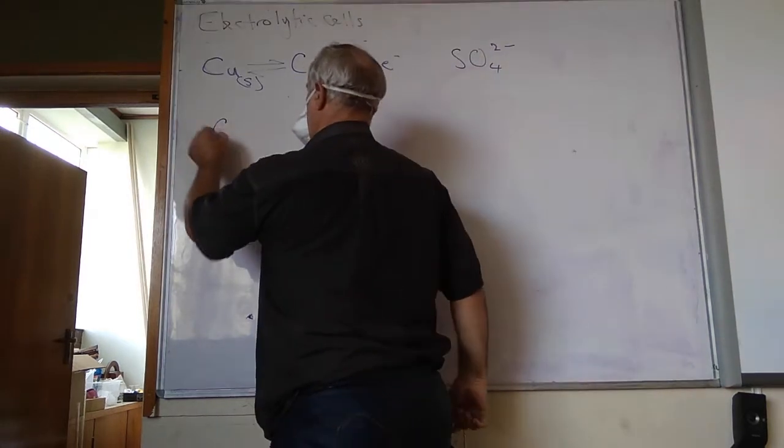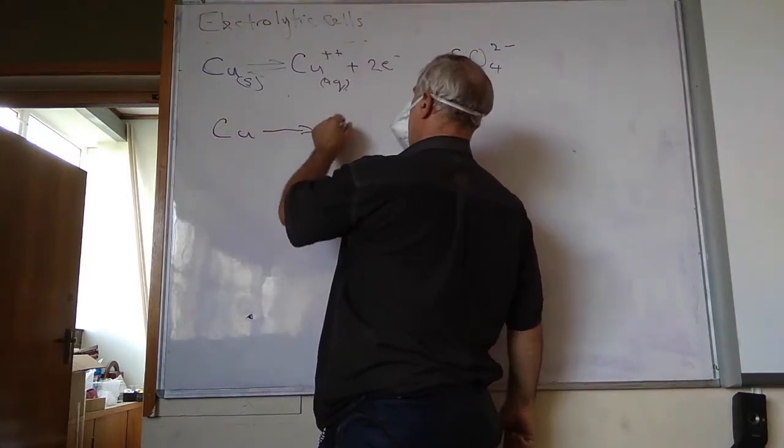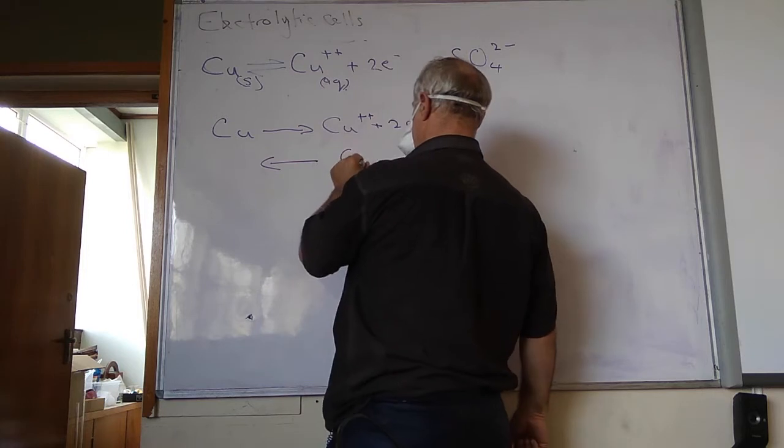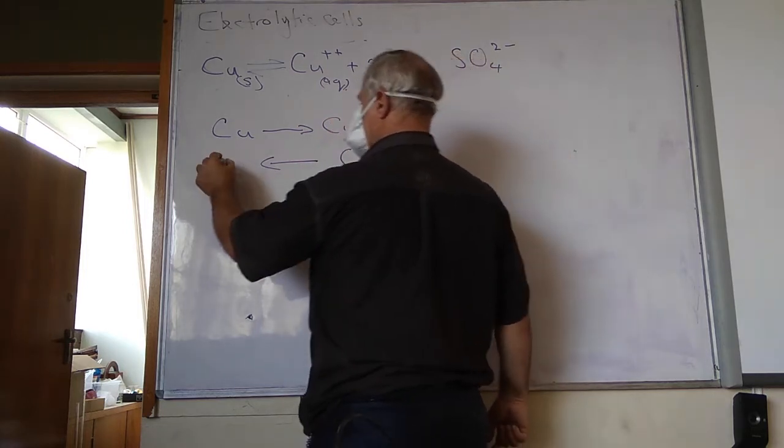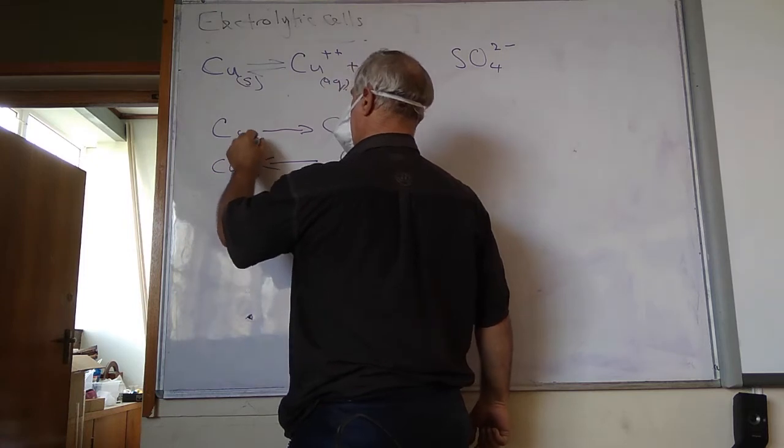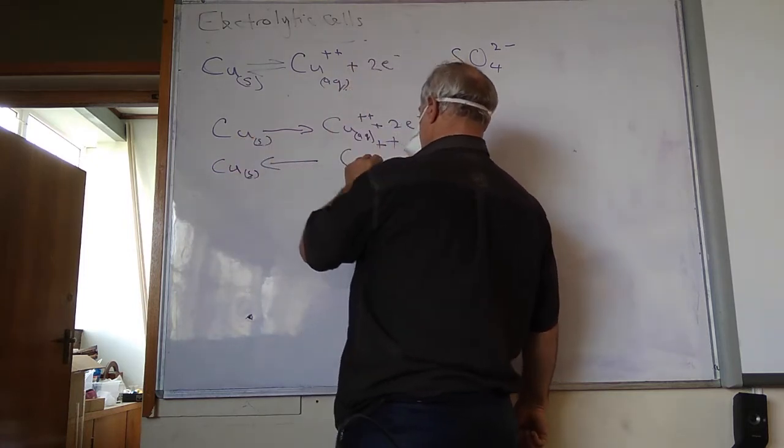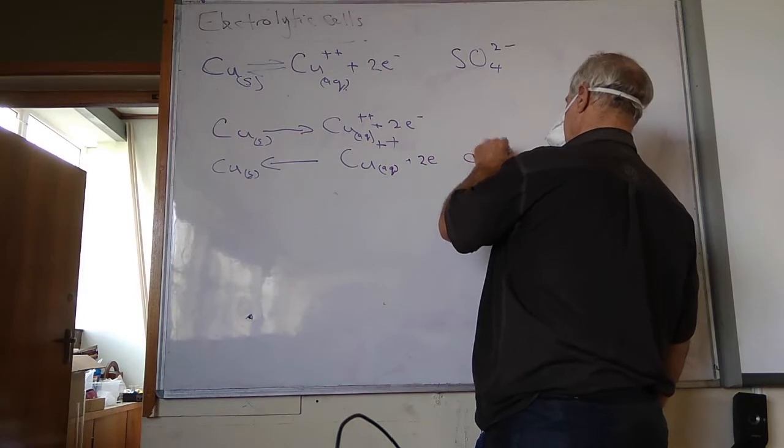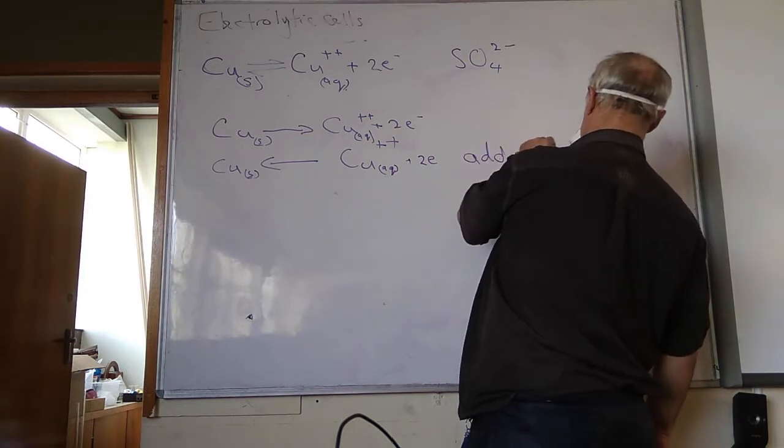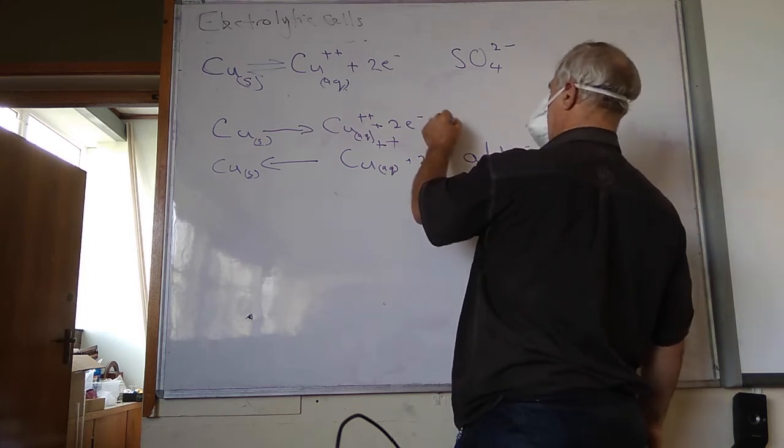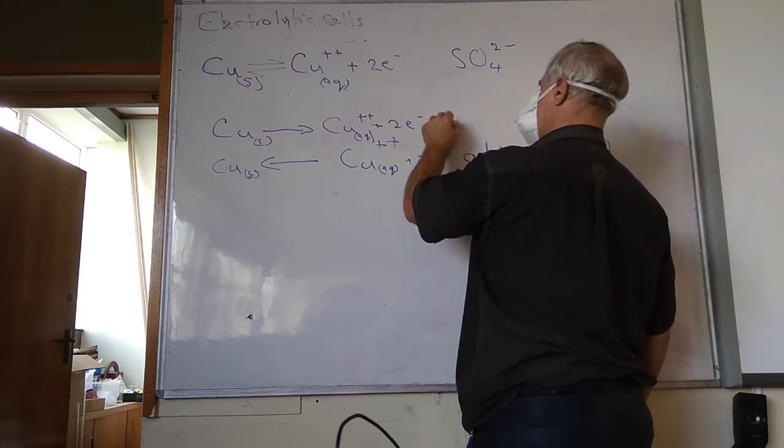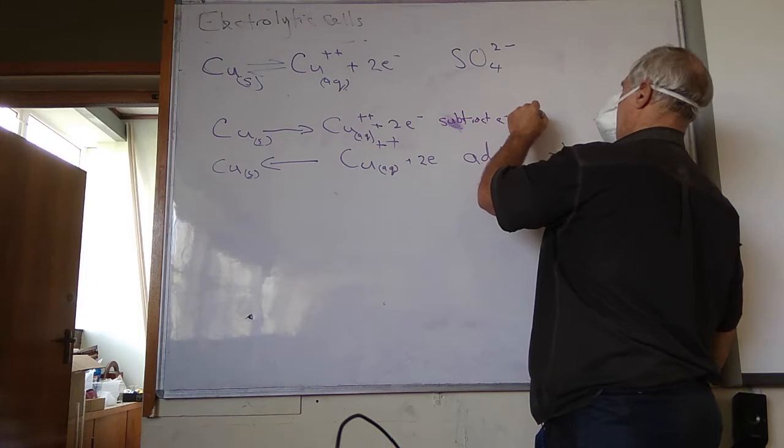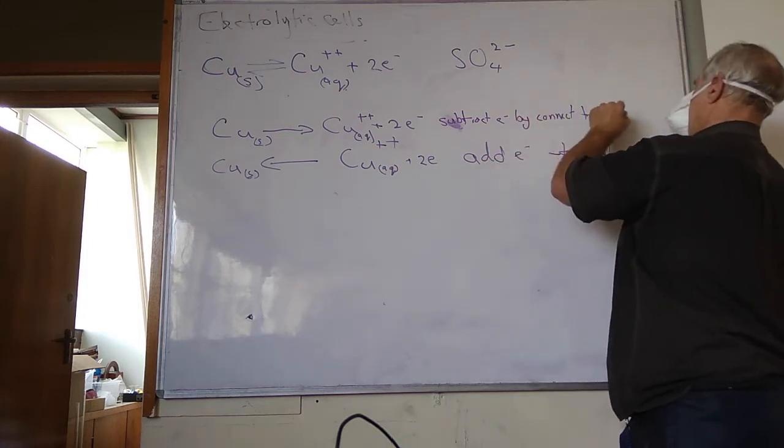So we could do this: we have one reaction that's this direction, and then we've got another one which is in this direction, which is Cu²⁺ plus two electrons going to form copper metal. So in this case we're adding electrons by making it to the negative terminal, and in this case we remove electrons or subtract electrons by connecting to the positive terminal.